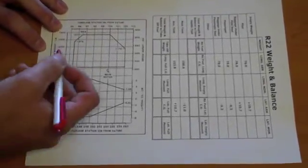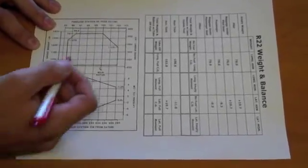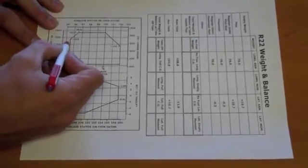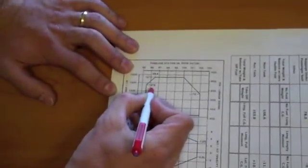We always start without fuel first. If we have a gross weight of 1,227 pounds we follow it over until we hit our CG of 96.3, which is going to put the point roughly there.